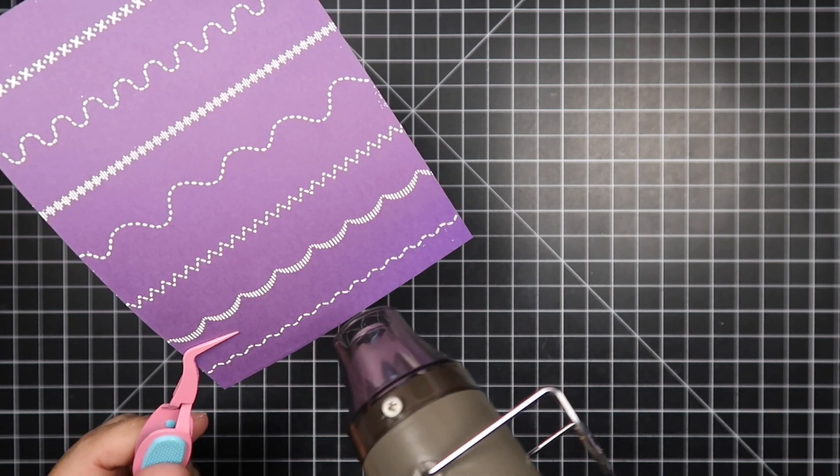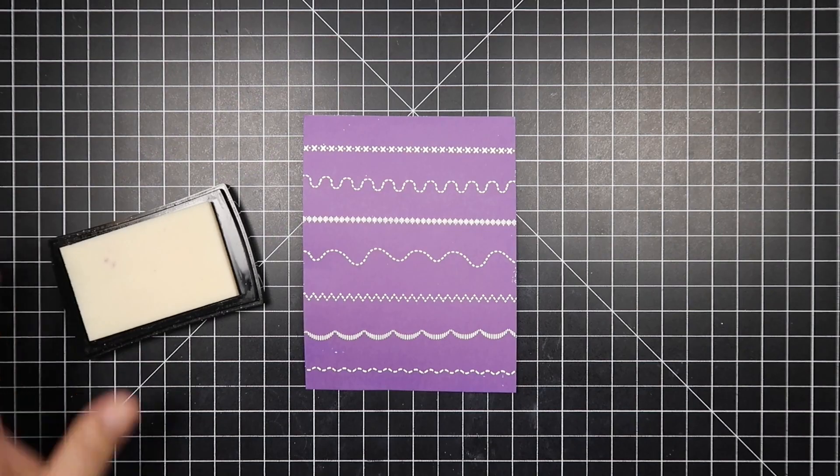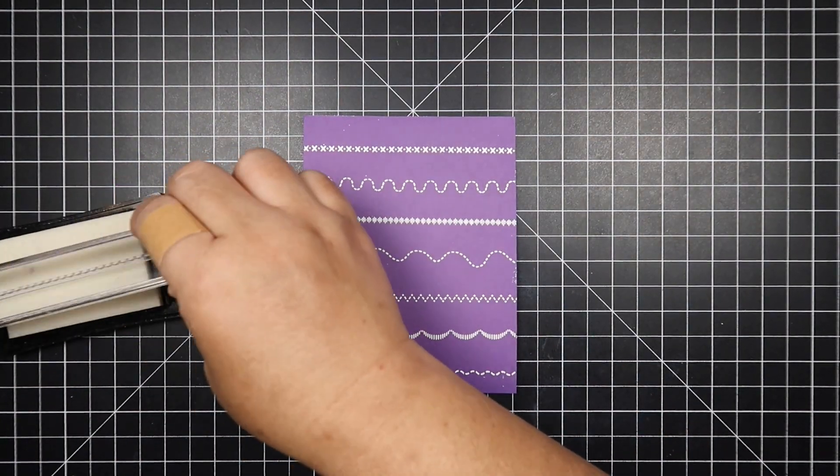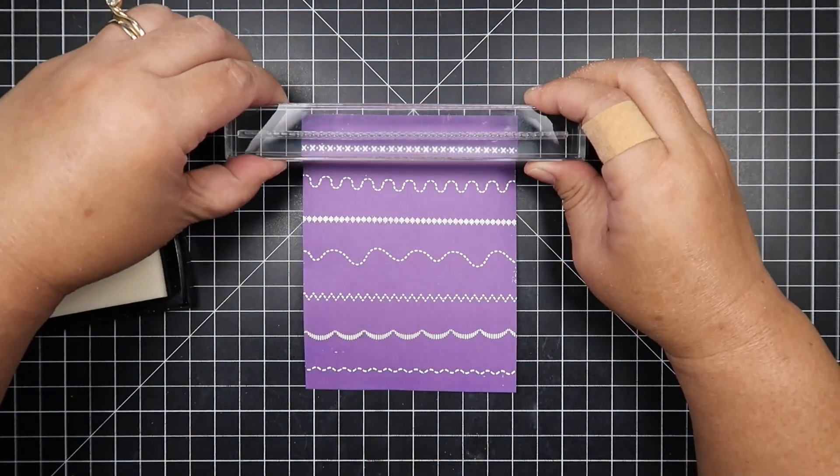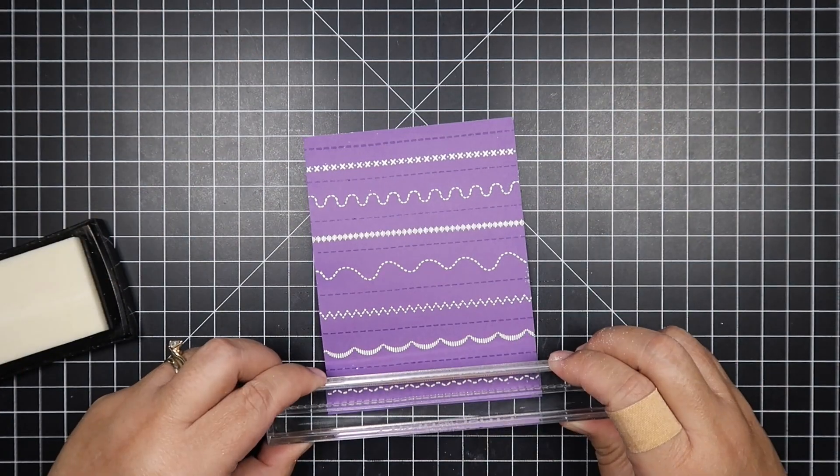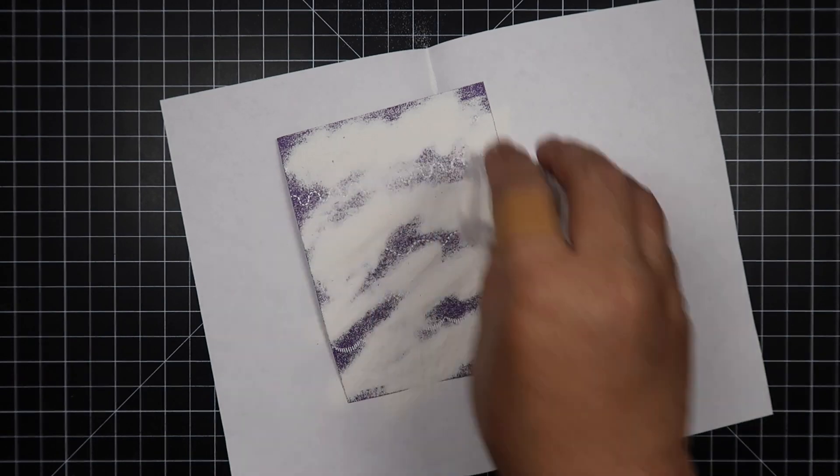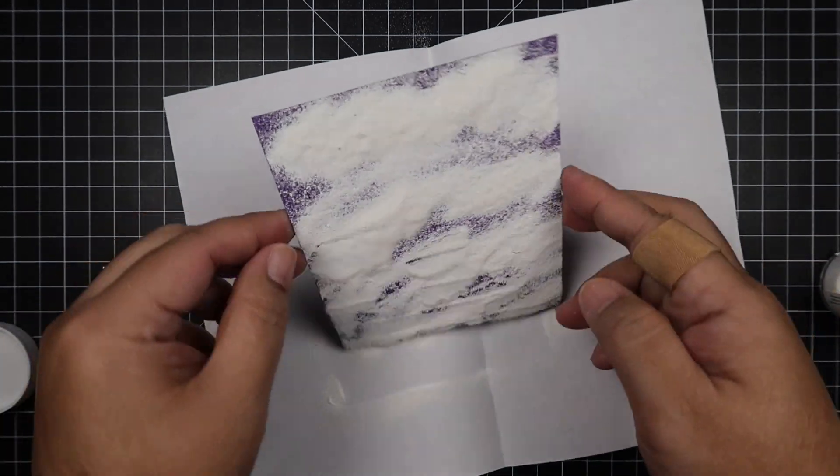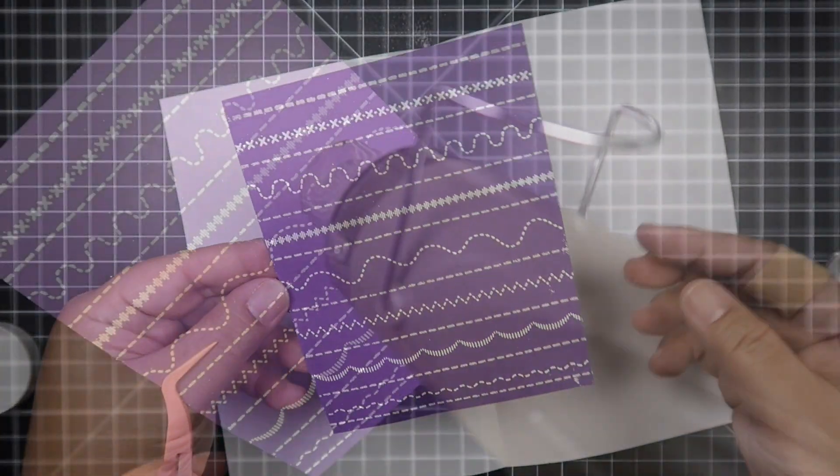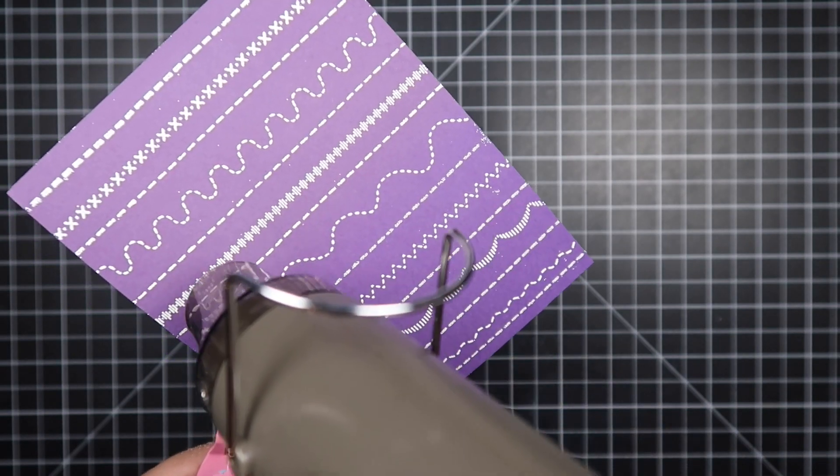Now let's go ahead and heat set this. You'll notice that there is a gap between each one of my borders, and that's because I did that on purpose. I'm going to come back to that. I chose a plain stitch border stamp and we're going to heat emboss with white embossing powder again. I'm going to be liberal with that, making sure each line is covered. Don't worry about the sides because we will be die cutting this.